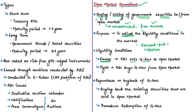To address excess money in the hands of people, RBI sells government securities to draw that money back to itself. When liquidity conditions are tight in the open market — that is, money is not available — when RBI buys securities back, it gives money back to the open market, thereby increasing liquidity.